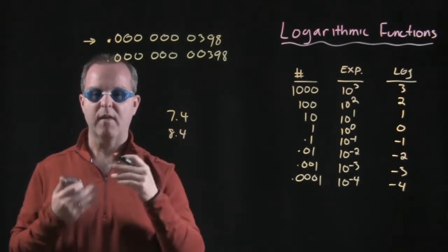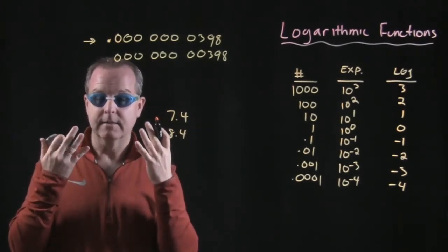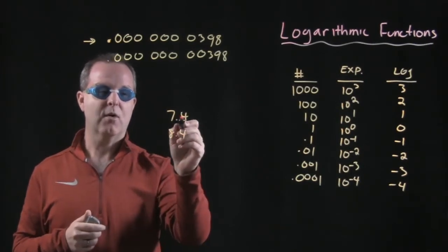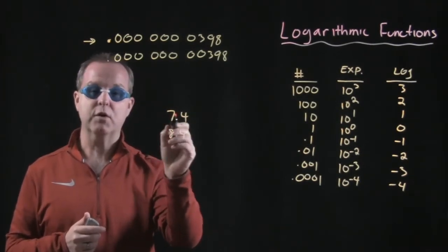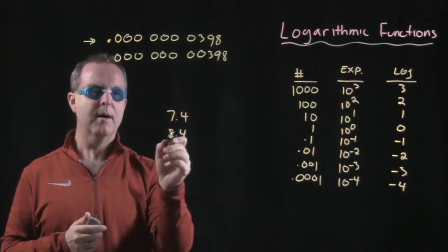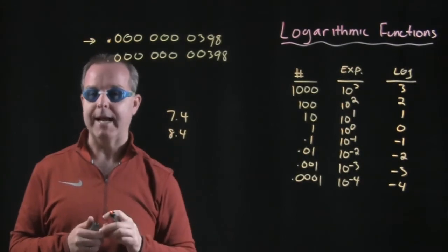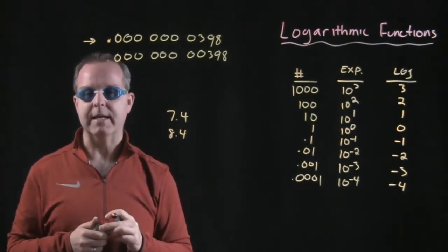7.4, that's the basic pH value of our eyes. 8.4 is a little bit more basic. And so, our eyes will feel good in water at 7.4, but if the pH is off balance by a factor of 10 up to an 8.4, then my eyes are going to get a little itchy.